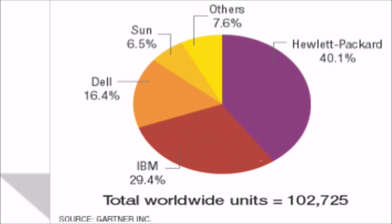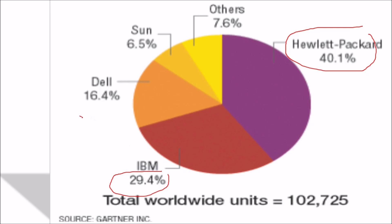Just to give you a glimpse of who the players are in the blade server market: HP holds around 40 percent, IBM around 30 percent, Dell around 16.4 percent, and others contributing the remaining share.